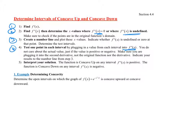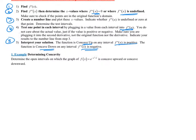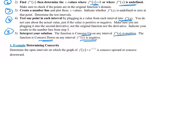Step five is interpret your solution. Remember: f double prime of x positive means it's concave up; f double prime of x negative means it is concave down. Now let's look at example one. It says determine the open intervals for which the graph of f of x equals e to the negative x squared over two is concave up or concave down.